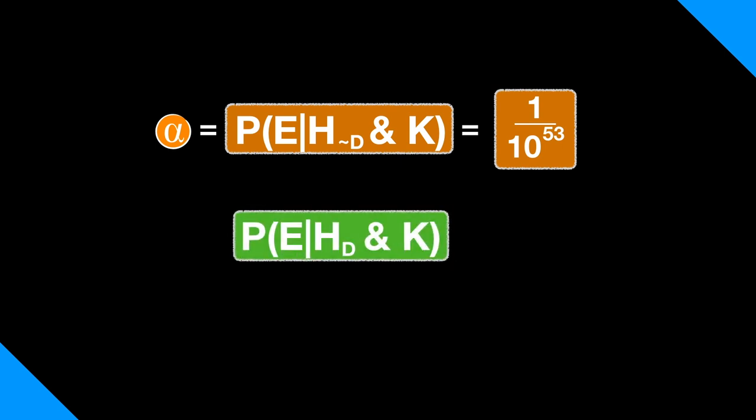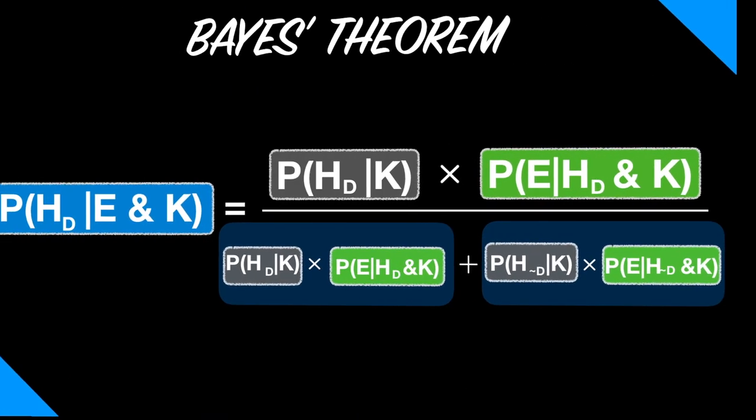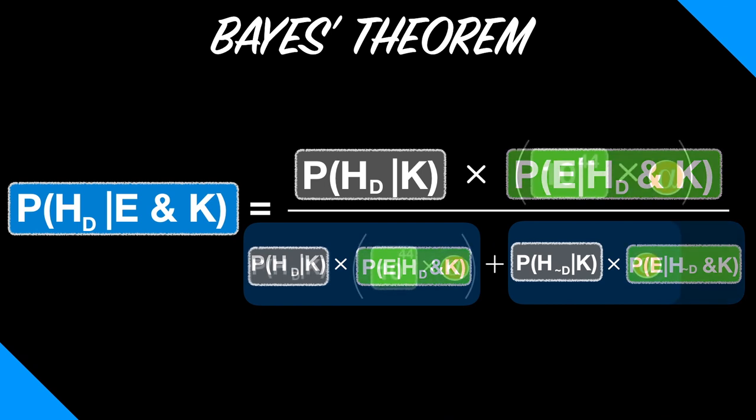Let the probability of E given H, D, and K equal what we said a moment ago, 1 over 10 to the 9th, or 1 in a billion. That's equivalent to 10 to the 44th over 10 to the 53rd, which is also equivalent to 10 to the 44th times alpha. Substitute these values into Bayes' theorem, and you get this.